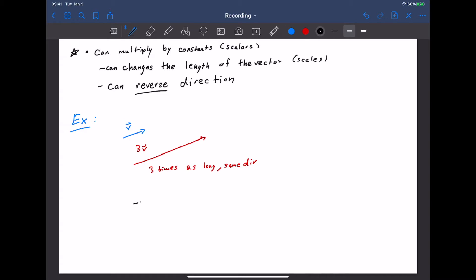What would negative V look like? That negative scalar is going to reverse the direction. If V went like this, then negative V would reverse it like that.